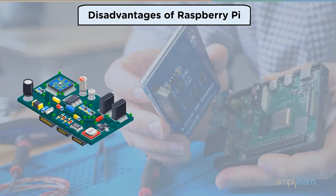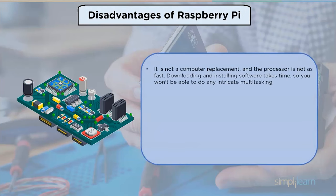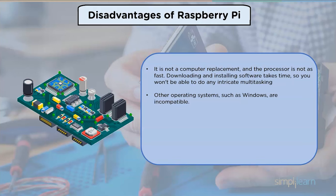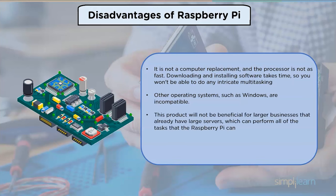Now let us look at the disadvantages of Raspberry Pi. Raspberry Pi is not a computer replacement and the processor is not as fast — downloading and installing software takes time, so you won't be able to do any intricate multitasking. Other operating systems such as Windows are incompatible. This product will not be beneficial for large scale businesses that already have large servers which can perform all the tasks that Raspberry Pi can. As a result, it would not be worth it, and putting everything together would take time.